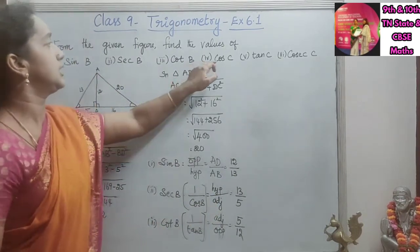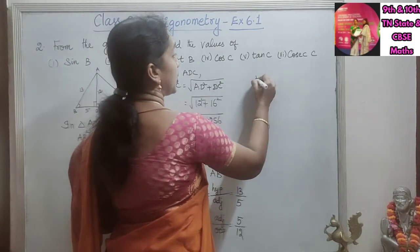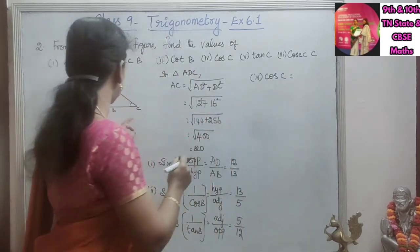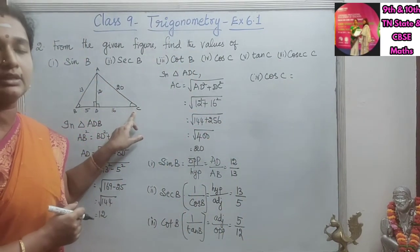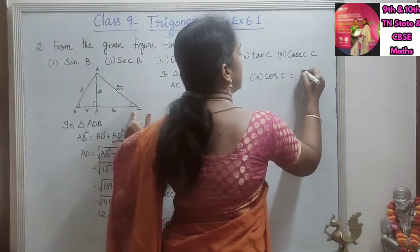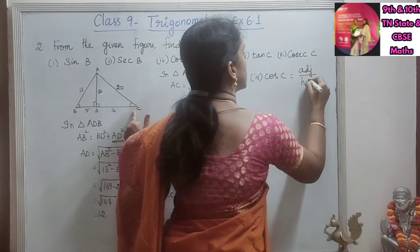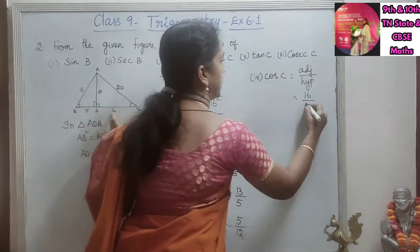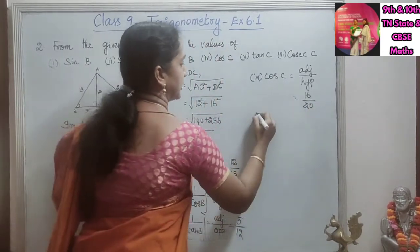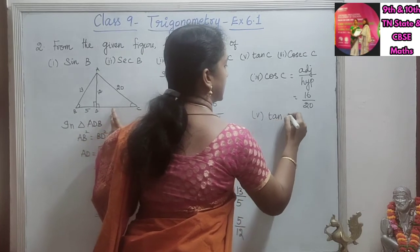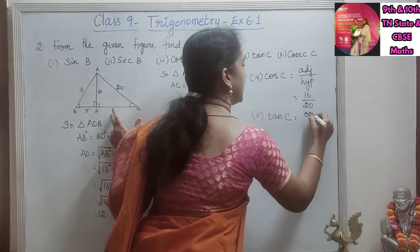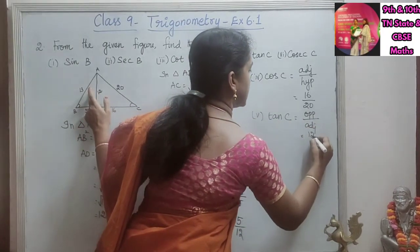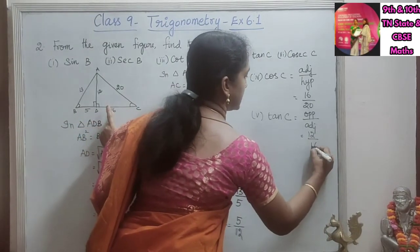The first three values are found. Then cos C, tan C, and cosecant C. For cos C, it is adjacent by hypotenuse — adjacent side is 16 and hypotenuse is 20, so cos C is 16 by 20. Then tan C is opposite by adjacent — opposite side for C is 12 and adjacent is 16, so tan C is 12 by 16.